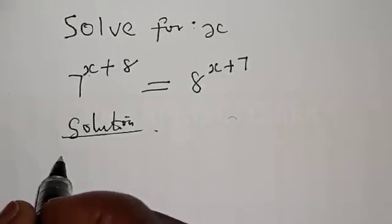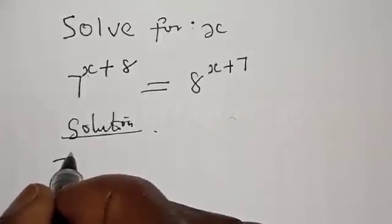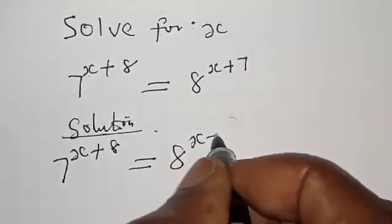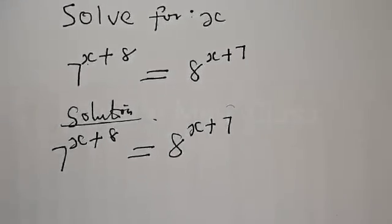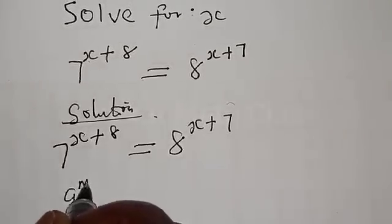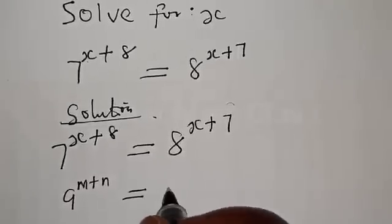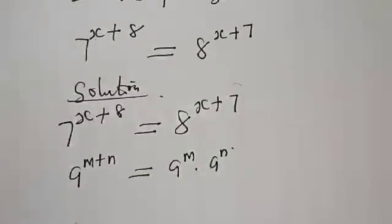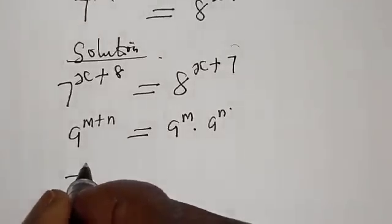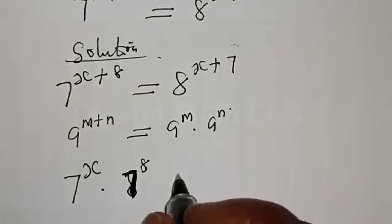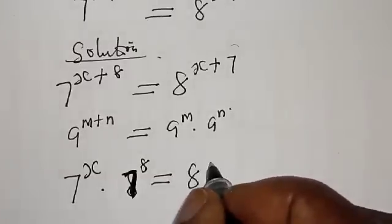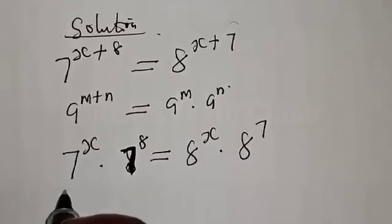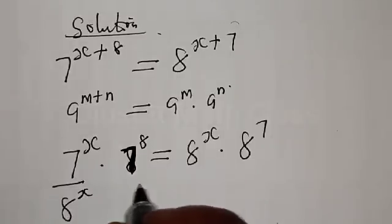Solution. We have 7 raised to power x plus 8 is equal to 8 raised to power x plus 7. We recall that if you have a raised to power m plus n, it is the same thing as a raised to power m multiplied by a raised to power n. Then the whole of this equation can be rewritten as 7 raised to power x multiplied by 7 raised to power 8 is equal to 8 raised to power x multiplied by 8 raised to power 7.